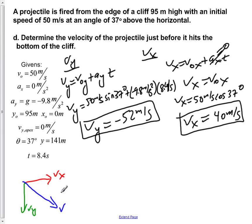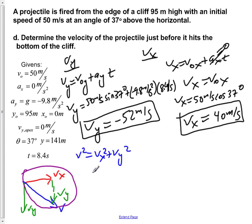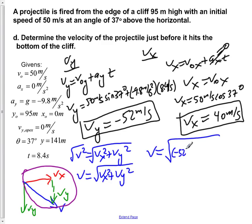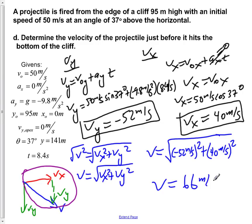Using the Pythagorean theorem to find the resultant velocity: V = √(Vx² + Vy²) = √((40)² + (−52)²). Calculating this gives a resultant velocity of 66 meters per second. So the velocity of the object at the bottom of the cliff is 66 meters per second.